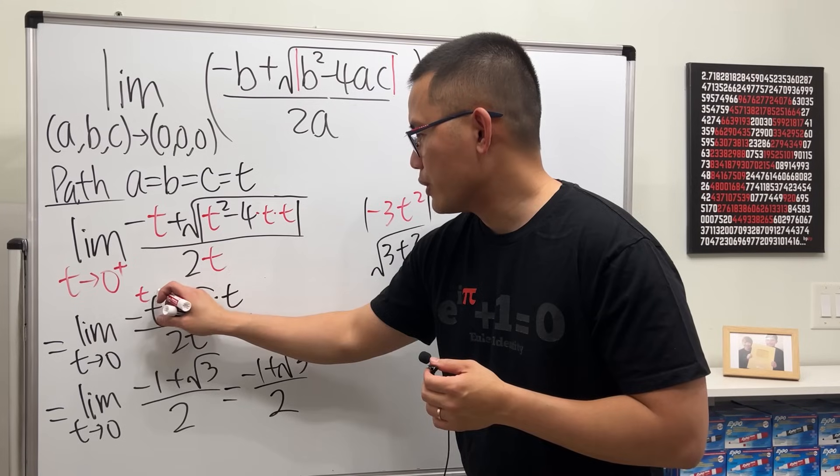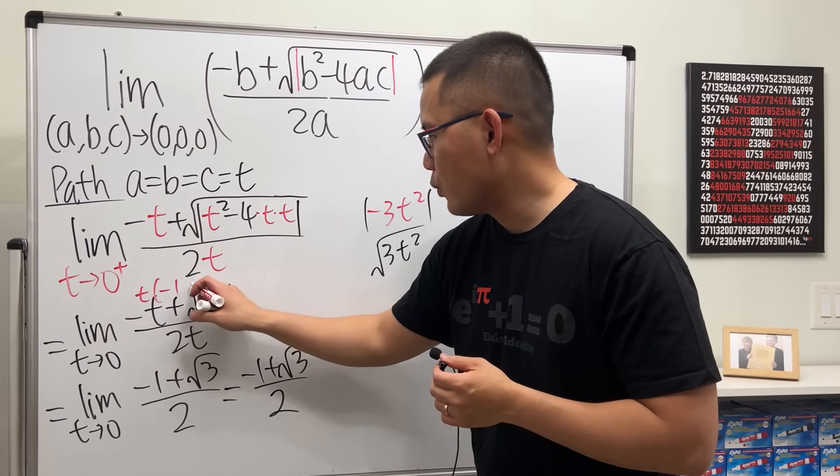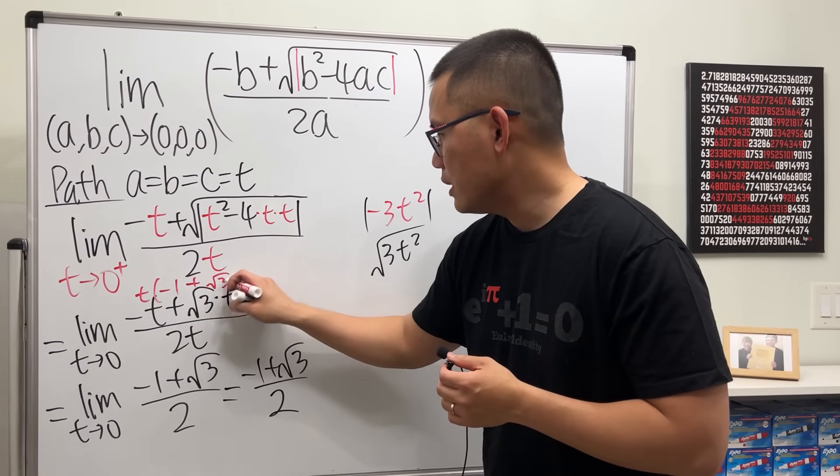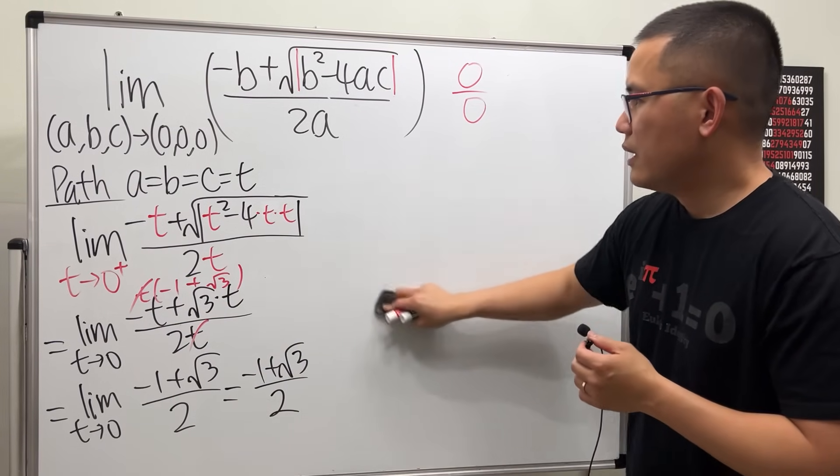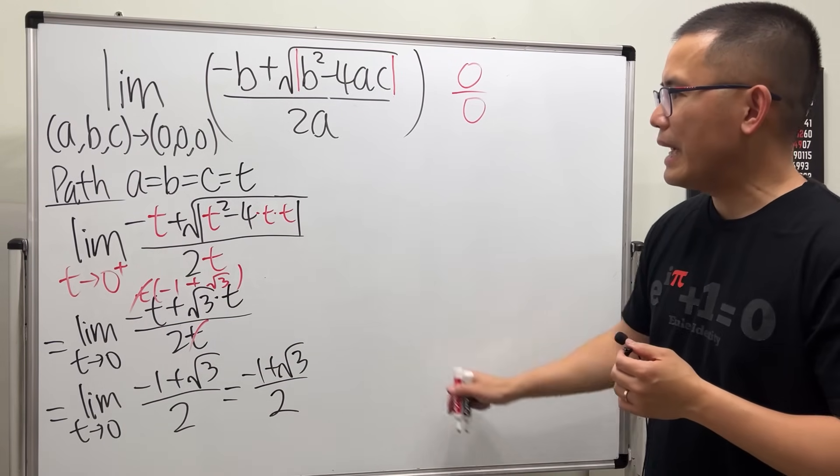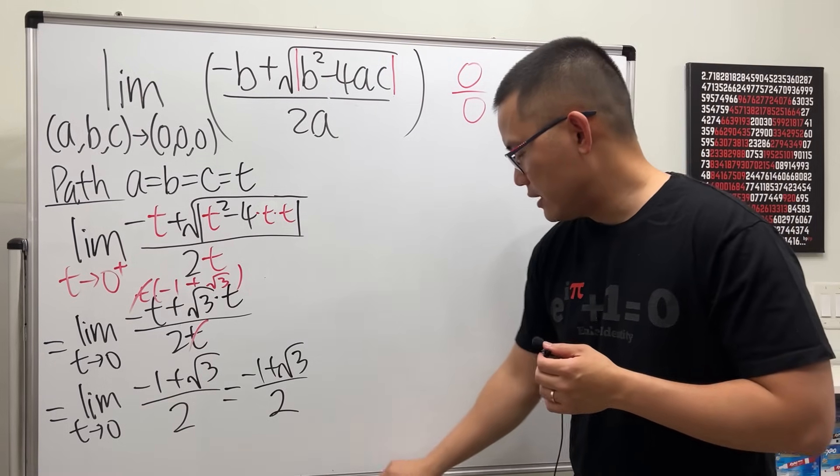And there's no more t, so the limit for this path is just negative one plus square root of three over two. Quite nice, I would say. Yeah, I don't know why I just want to show you guys the work. Factor out the t, that's negative one plus square root of three, and cancel the t and t. All right, cool. Now we have to come up with another path that will give us different limit.